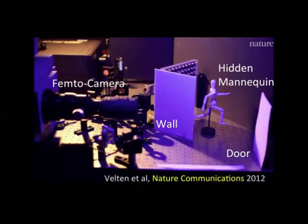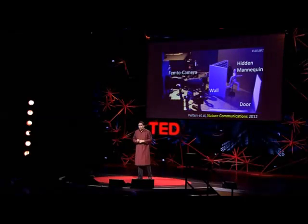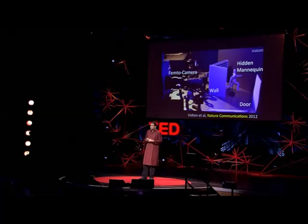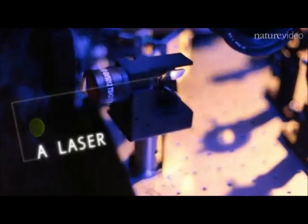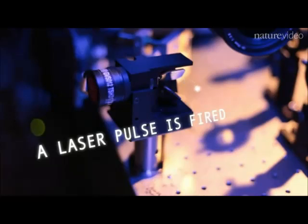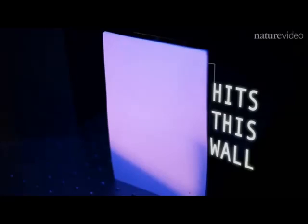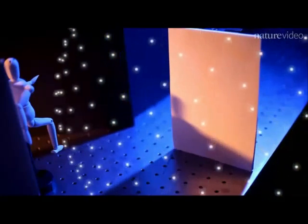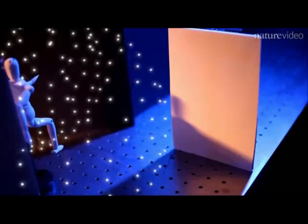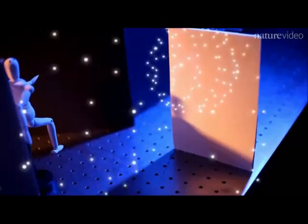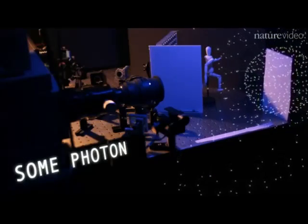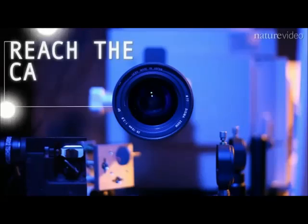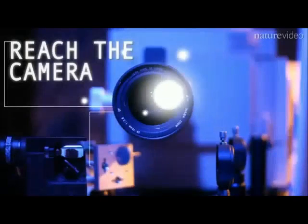On the left, you see our femto camera. There's a mannequin hidden behind a wall, and we're going to bounce light off the door. After our paper was published in Nature Communication, it was highlighted by nature.com and they created this animation. We fire those bullets of light and they hit the wall. Because of the packet of photons, they scatter in all directions. Some of them reach our hidden mannequin, which in turn scatters that light, and the door reflects some of that scattered light. A tiny fraction of the photons come back to the camera — and most interestingly, they all arrive at a slightly different time slot.